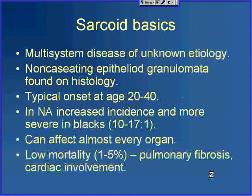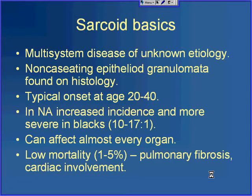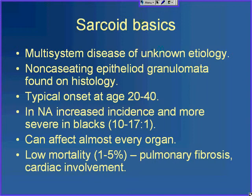Sarcoid is a multi-system disease of unknown etiology, characterized on histology by non-caseating epithelial granulomata. Typical onset is in young adults, though sarcoid can affect people throughout the age range — children and the elderly included. In North America there is a strong increased incidence in blacks, though interestingly that doesn't carry over to Europe, where sarcoid more commonly affects whites. Sarcoid can affect almost every organ, and although relatively common, mortality is very low at 1 to 5%, typically from pulmonary fibrosis or cardiac involvement.